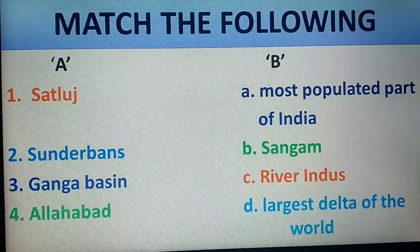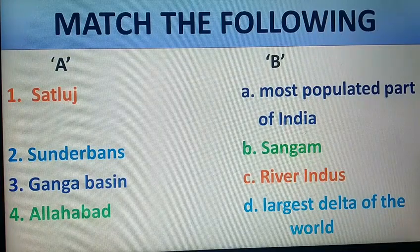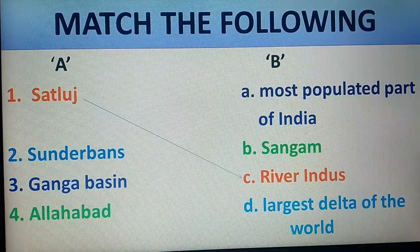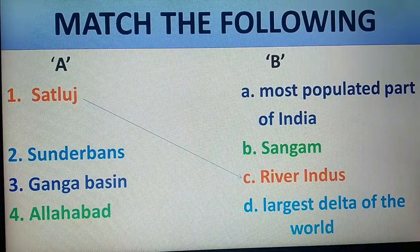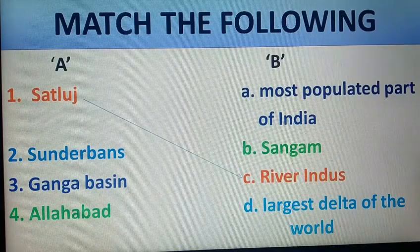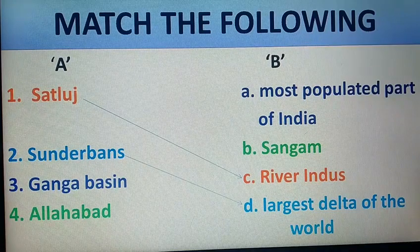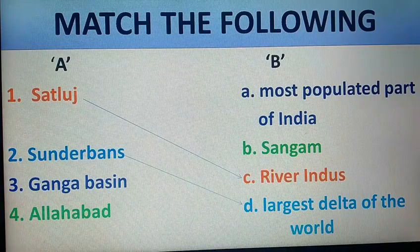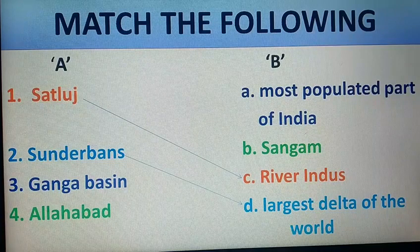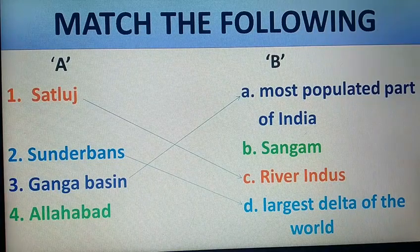Now for match the following, we have column A and column B. Satluj is the tributary of river Indus, so I will match it with C. Sundarbans is the largest delta of the world, so I match second with D. Ganga and its tributaries make the area very fertile, which is why it is the most populated — so Ganga basin matches with A. Ganga basin is the most populated part of India.